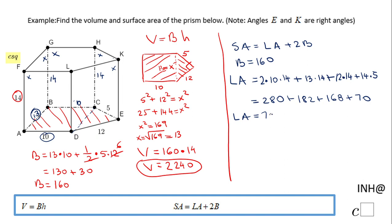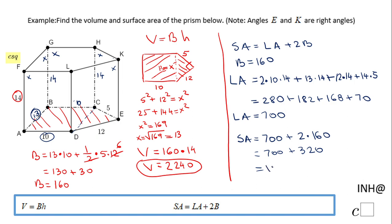The lateral area will be 700 square units. Now we can find the surface area: 700 lateral area plus 2 times 160 for the two bases equals 700 plus 320, so altogether the surface area is 1020 square units. And that's it! If you enjoyed this video clip, don't forget to click the like button and come back to C Square for more help — thank you!